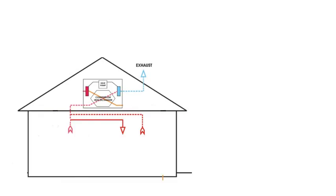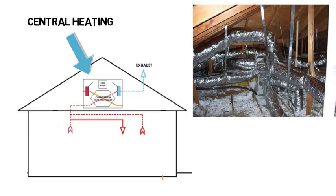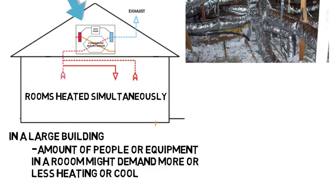Think of the heating system for your house. There is likely a furnace, which is where heat is created that warms the air. Then a fan is turned on that pushes that warm air throughout the ducts in the house to the vents to warm the house. This shows central heating, where the heat for the entire house comes from one central location. In a house, most rooms are heated simultaneously with just one thermostat. But in a large building, things change because the amount of people or equipment in a room might demand more or less heating and cooling.